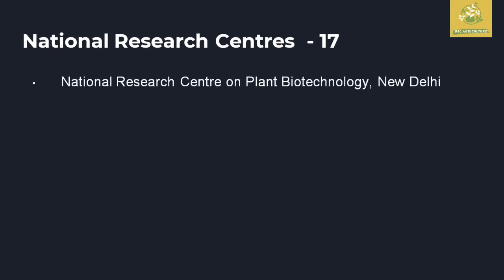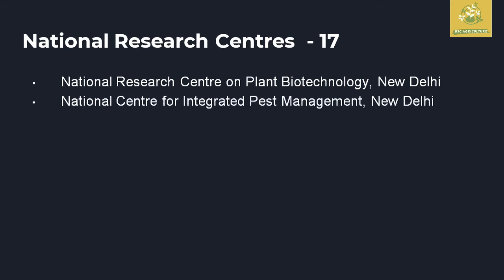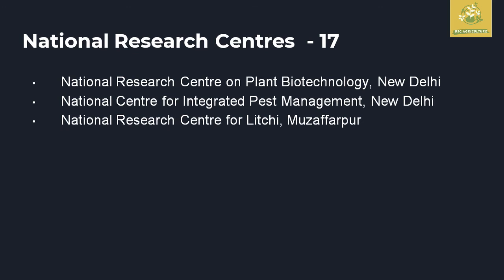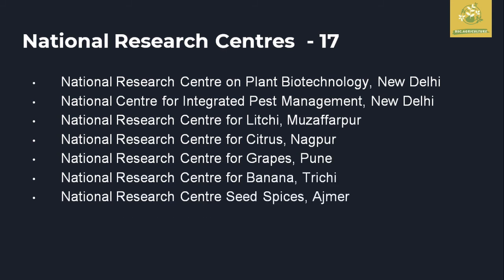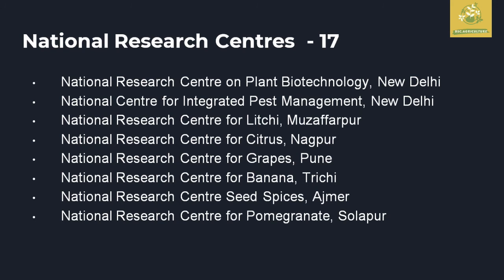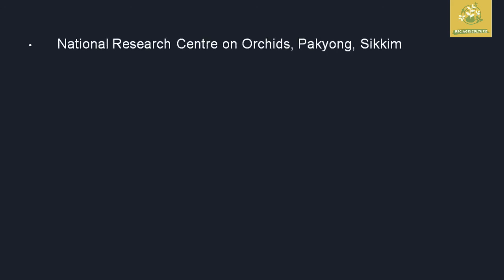There are 17 national research centers, and 16 of their names start with 'National Research Center for.' The only exception is the National Center for Integrated Pest Management in New Delhi. The centers include: National Research Center for Litchi at Muzaffarpur, Citrus at Nagpur, Grapes at Pune, Banana at Trichy, Seed Spices at Ajmer, and Pomegranate at Solapur. The one for Orchids is at Pakyong in Sikkim.